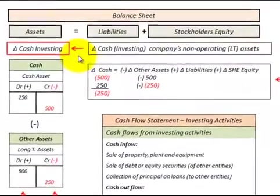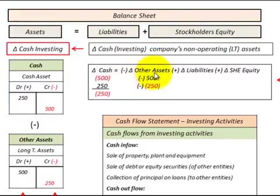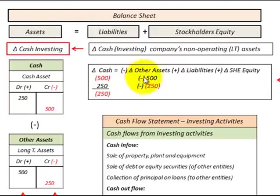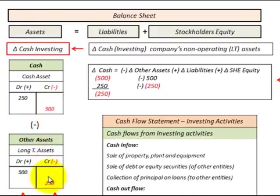Let's look at our change in cash for investing activities. That's where we look at the company's non-operating long-term assets. An increase in those long-term non-operating assets equates to a decrease in our cash. And in the case where we had a decrease in those long-term assets, it would be an increase in our cash account. In our T-accounts, a debit to long-term assets is a credit to cash, and vice versa, a reduction in long-term assets is a debit or increase in our cash.